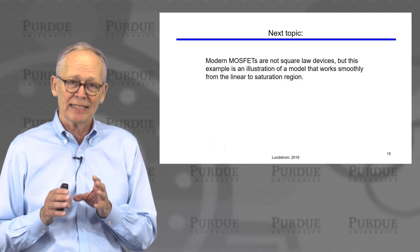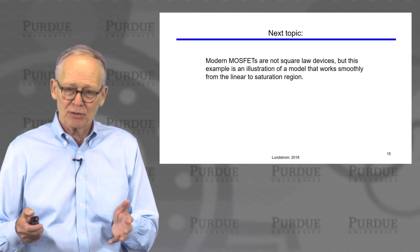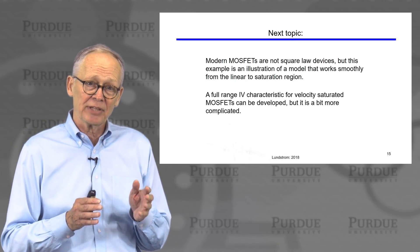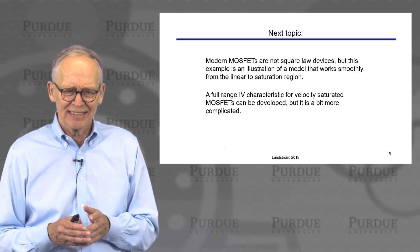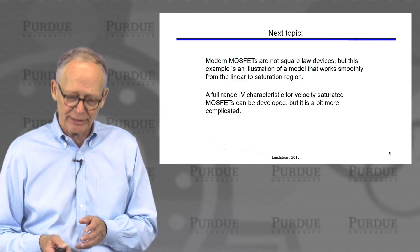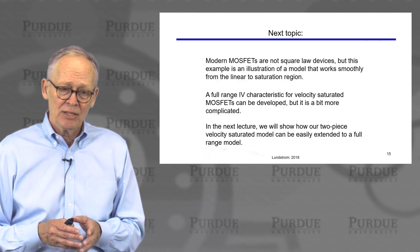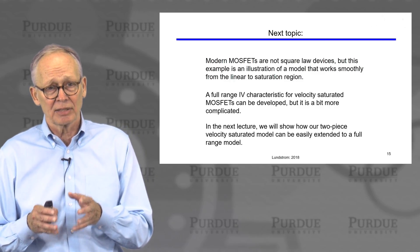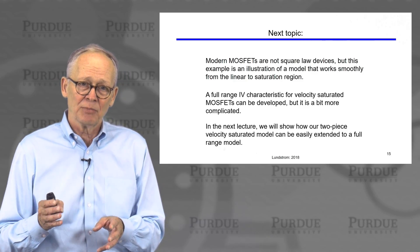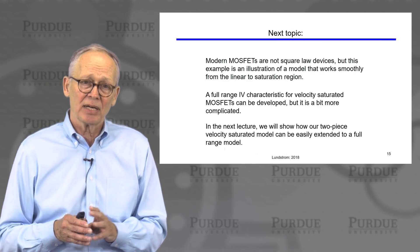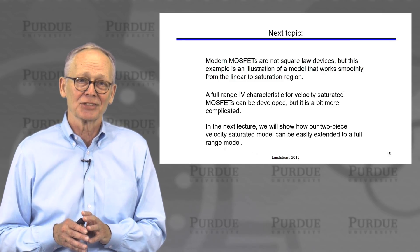Modern short-channel MOSFETs are linear devices where the current goes as (V_G minus V_T) to the first power. But this example shows how you can derive an IV characteristic that goes smoothly across the whole range of drain voltages. We could do the same for the velocity saturation model discussed in the previous lecture — that's more relevant to modern transistors, though a little more complicated. It turns out there's an easier way: we can take the linear regime current and the saturation current from the velocity saturation model and smoothly connect them. That's the topic for the next lecture.